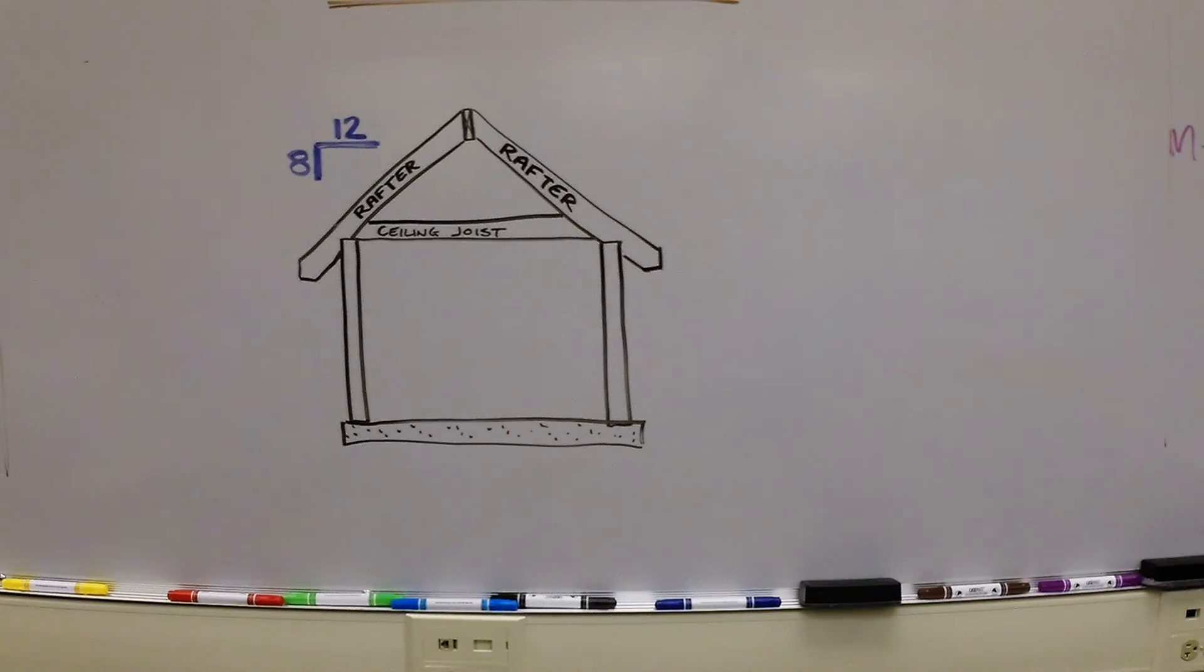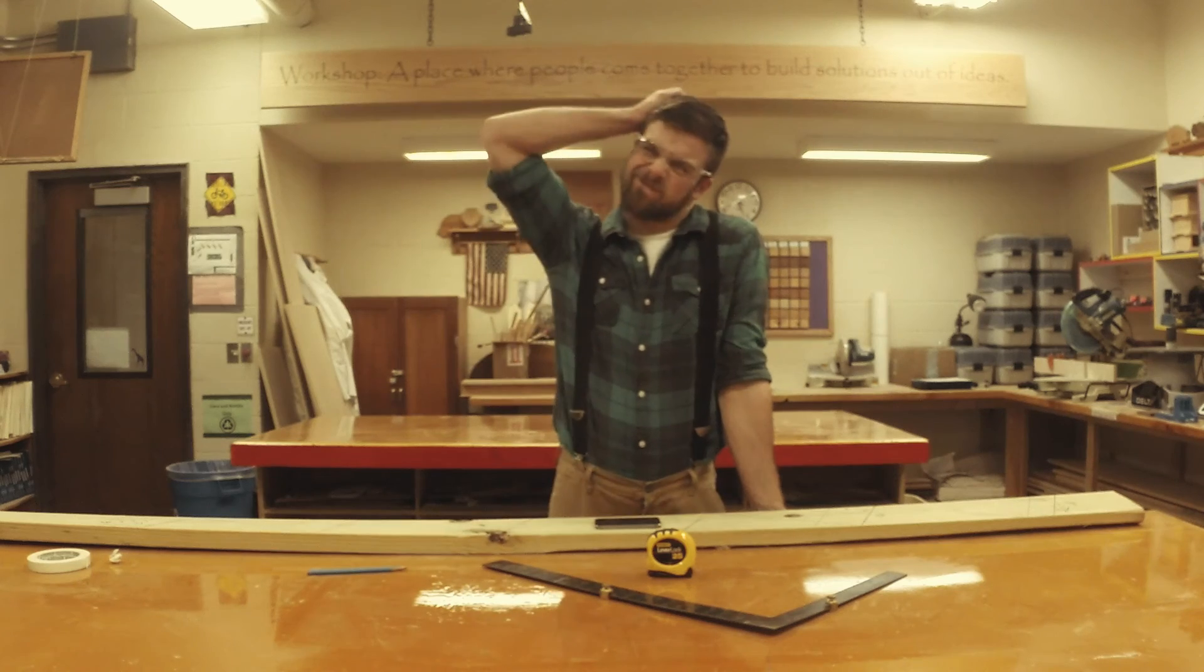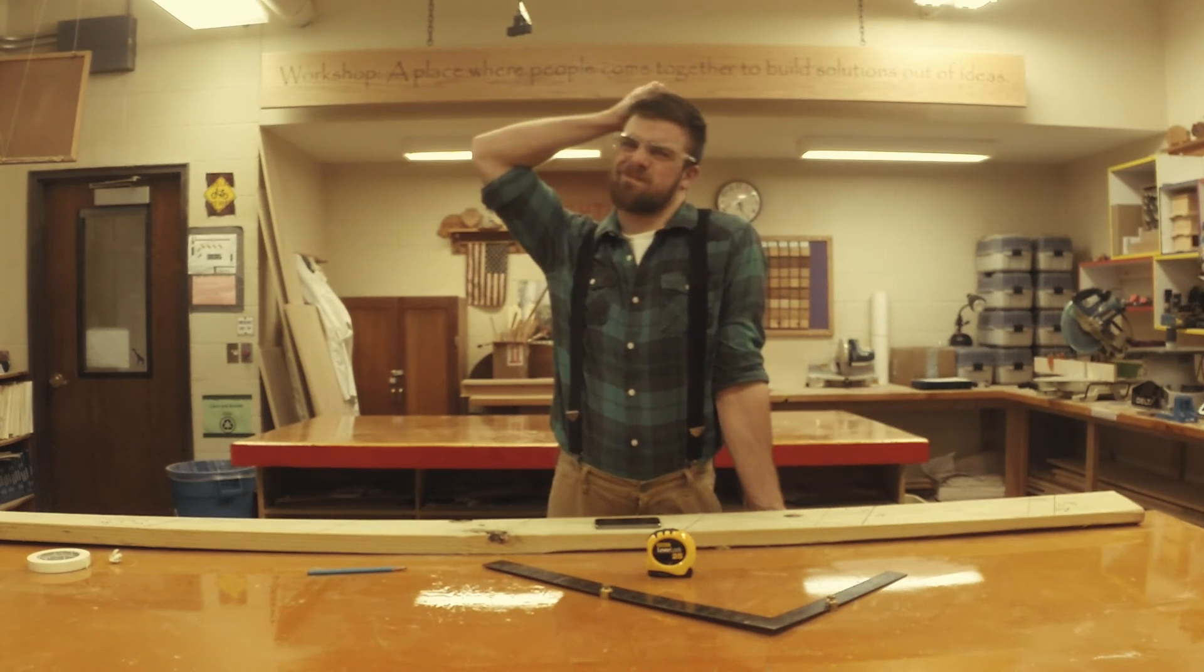The last thing we need to lay out is the bird's mouth. This is the notch where the rafter will sit on top of your wall. The vertical cut of the bird's mouth will be made on the building line, but we need to do a little more figuring to determine where the horizontal cut should be made.